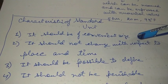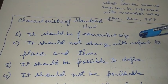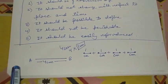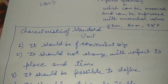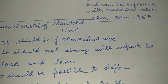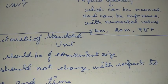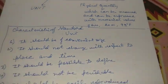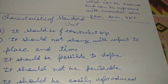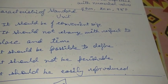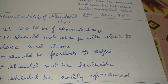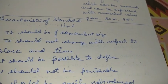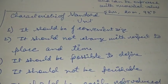Now let's see the characteristics of a standard unit. The very first and foremost is that it should be of a convenient size. For example, if we have to measure the length of this paper, we would use centimeters — not kilometers. Writing the length as 0.0005 kilometers would be absurd and useless. So when measuring small lengths we use centimeters or meters, and when measuring the distance between two cities we use kilometers.